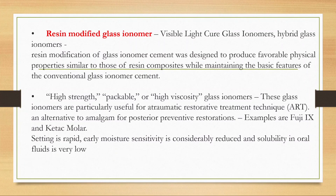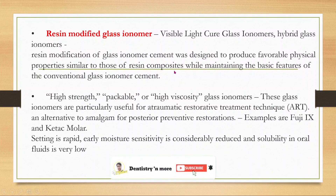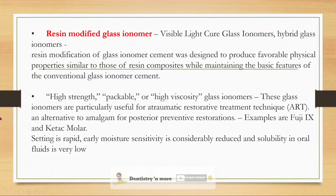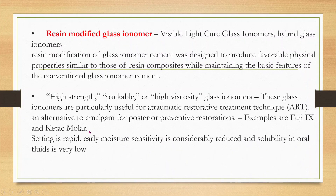Resin-modified GIC — also called visible light-cured or hybrid glass ionomers — was designed to produce favorable physical properties similar to resin composites while maintaining the basic features of conventional GIC. This high-strength, high-viscosity GIC is commonly used in the ART technique. A popular example is Ketac Molar; setting is very rapid, early moisture sensitivity is considerably reduced, and solubility in oral fluids is very low.